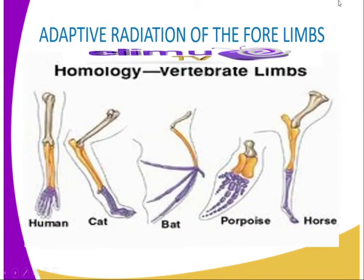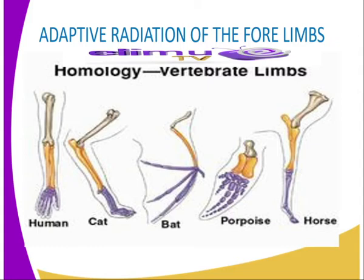You can see the four limbs here — they have the same origin. The human, the cat, the bird, the bat, and the horse: these four limbs initially looked the same. But due to the break-up of Pangaea and other factors, they have been modified to perform different functions. The form and anatomy of the four limbs differ in various vertebrate groups, while the basic pentadactyl — that is the five-digit structure — is retained.